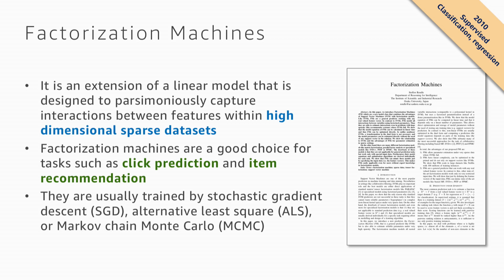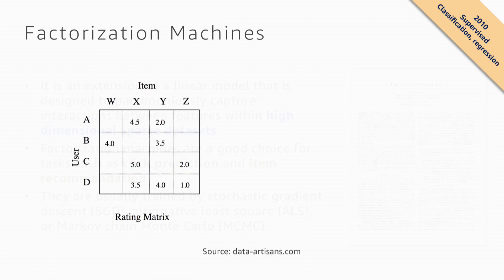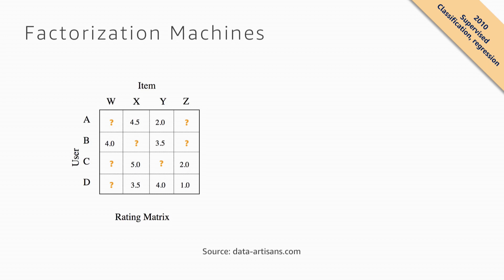This worked very well, but when the internet came along it didn't work for problems like item recommendation and click prediction. Netflix famously ran a big prize around 2010 trying to optimize recommendation. The problem is that linear models need a lot of data — and if you think of the Netflix catalog as a user-item matrix, most users haven't seen or rated most movies, leaving huge holes in the data.